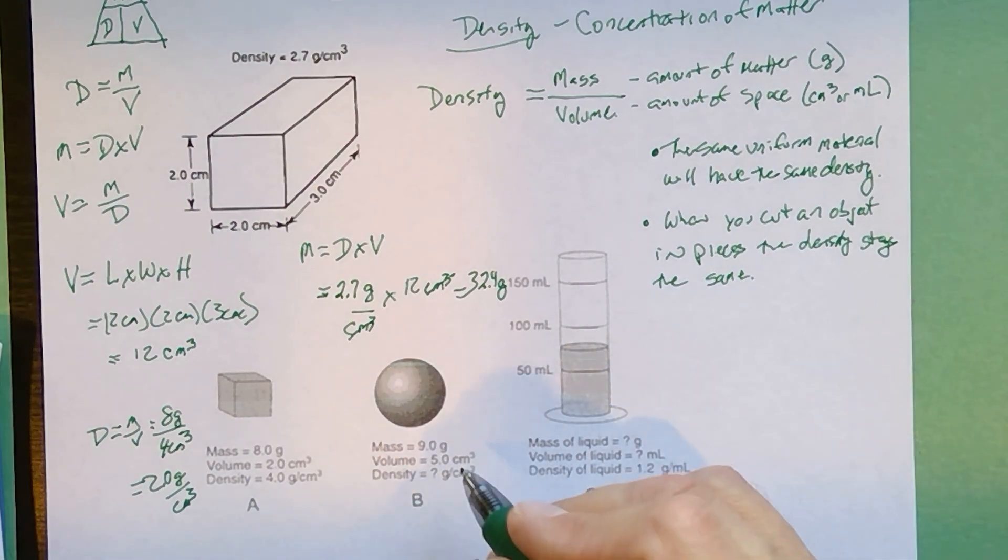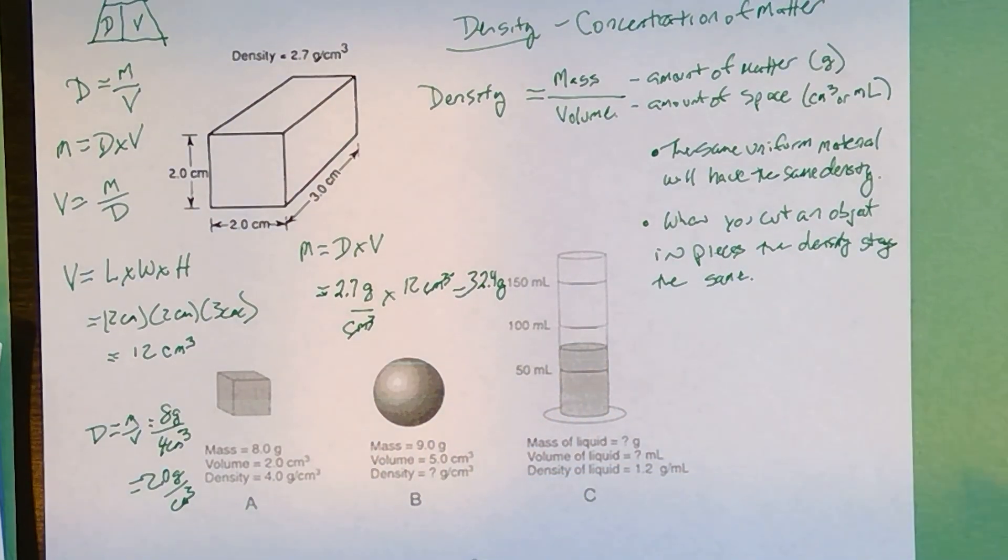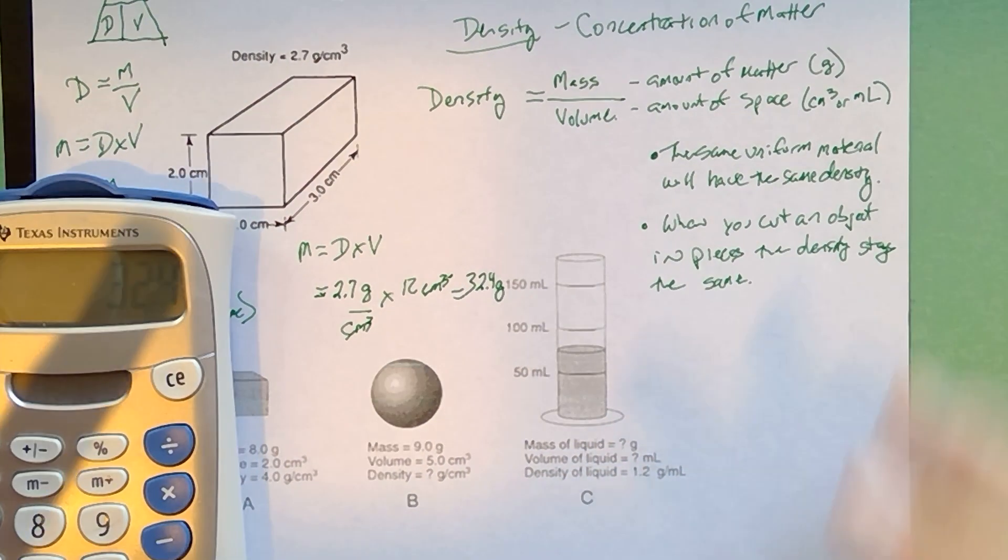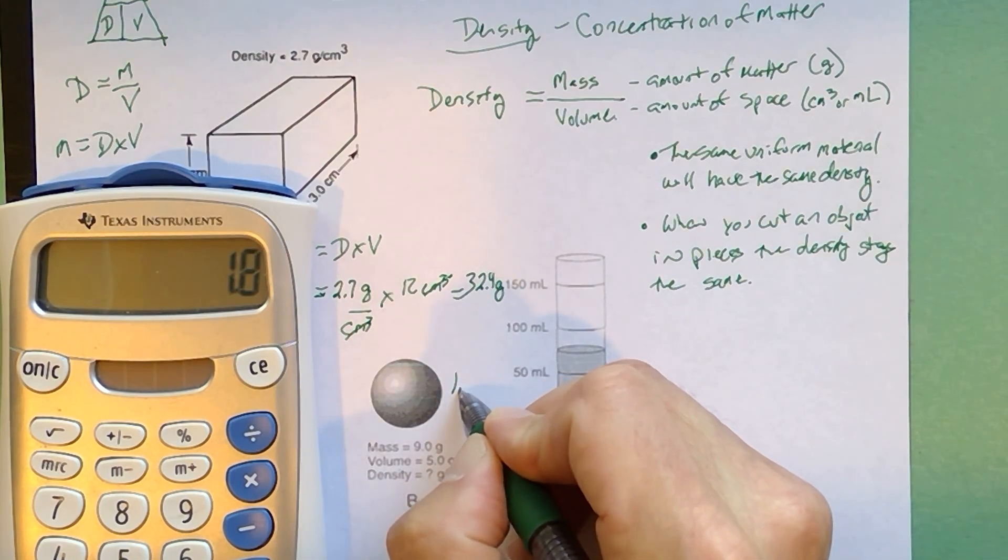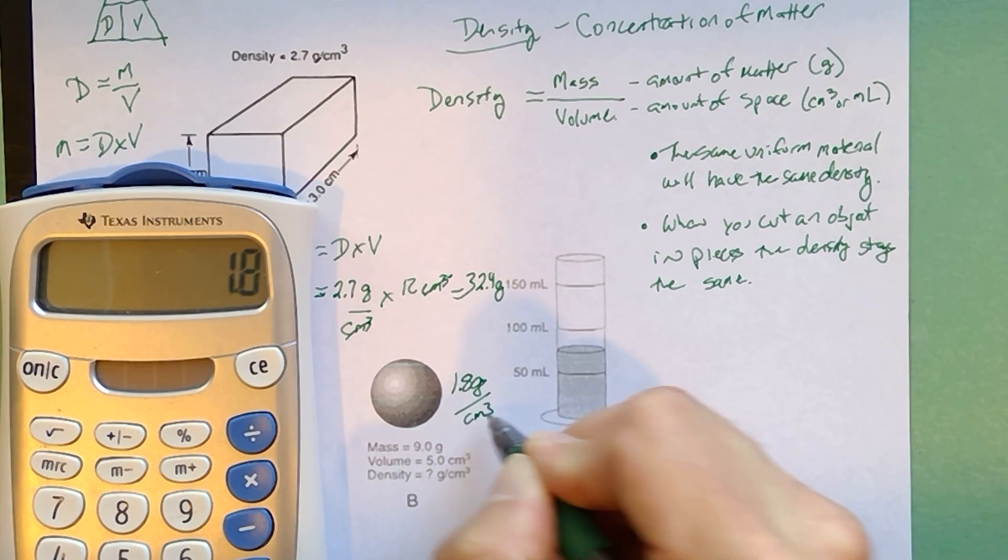Now, sphere B. They give you the mass, they give you the volume. So I'm not even going to write this one out. I will just plug it into the calculator for you. 9 divided by 5. That's the mass over volume. So this is 1.8 grams per cubic centimeter.